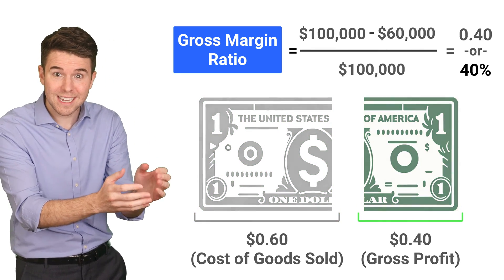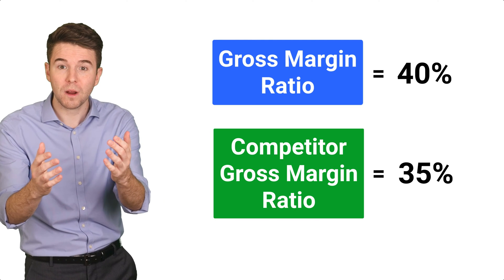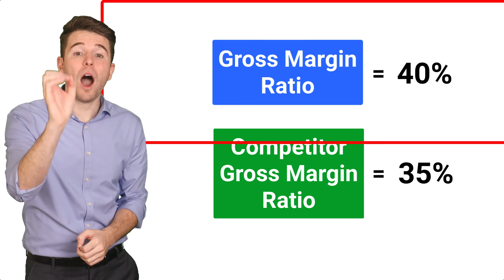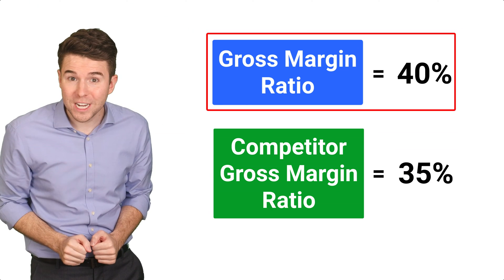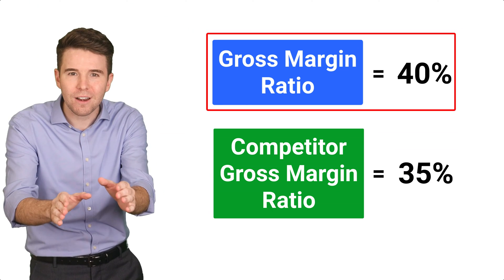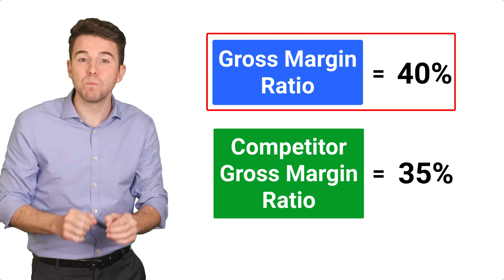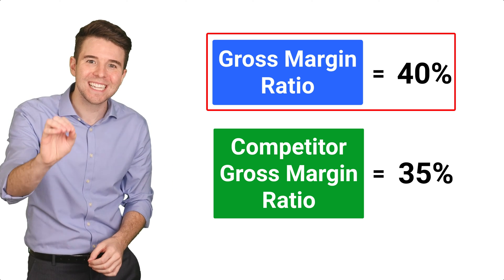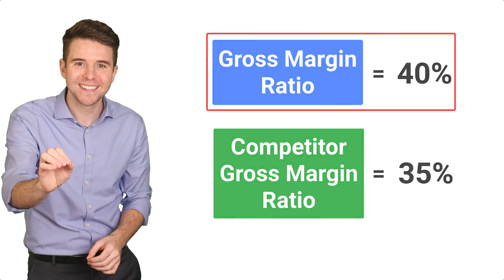To continue our analysis, let's say a competitor has a gross margin ratio of 35%. In this comparison, our company with a 40% ratio is performing better, as it retains more money per dollar of sales to cover other expenses and still make a profit. In the end, the gross margin ratio is a great tool to measure a company's ability to turn a profit by controlling their cost of goods sold.